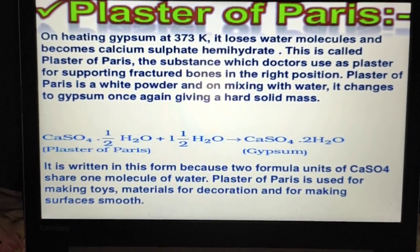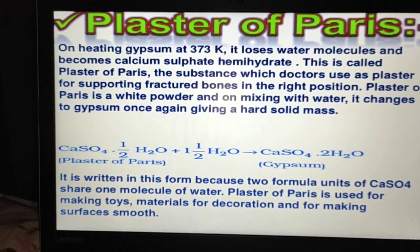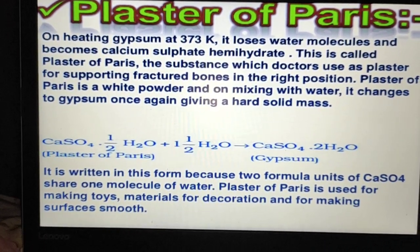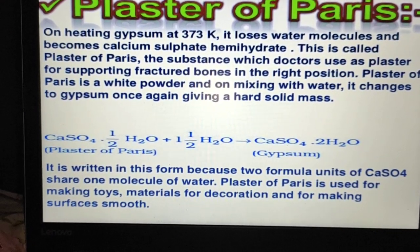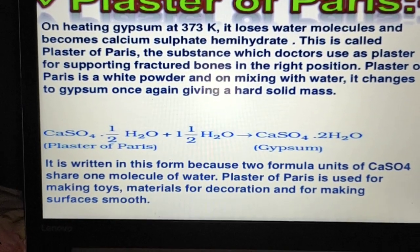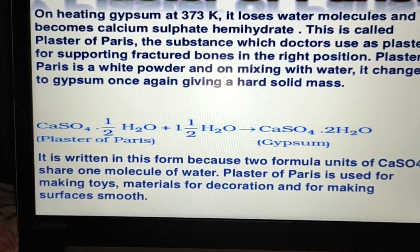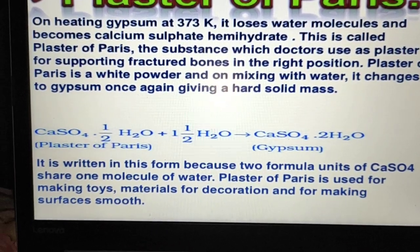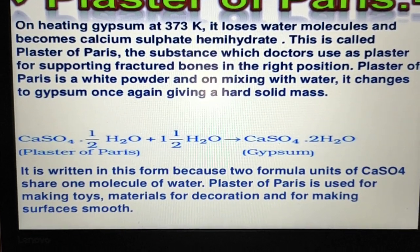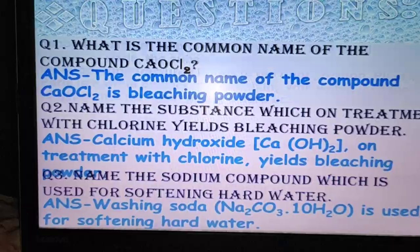On heating gypsum at 373 K — this temperature is very important to remember — it loses water molecules and becomes calcium sulfate hemihydrate (hemi means half), called plaster of paris. This is the substance doctors use as a plaster for supporting fractured bones. Plaster of paris is a white powder; on mixing with water it changes back to gypsum: CaSO₄·½H₂O + 1½H₂O → CaSO₄·2H₂O (gypsum). It is used for making toys, decorative materials, and for making surfaces smoother.